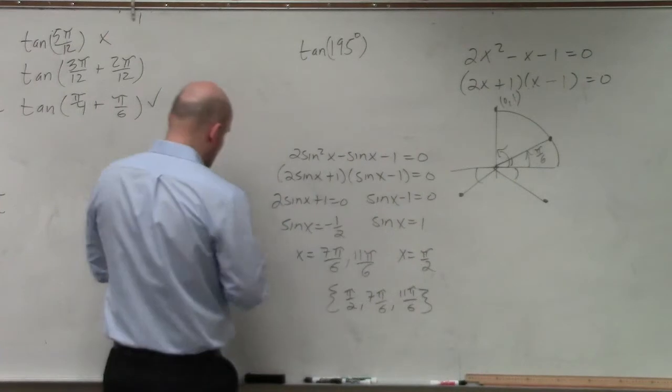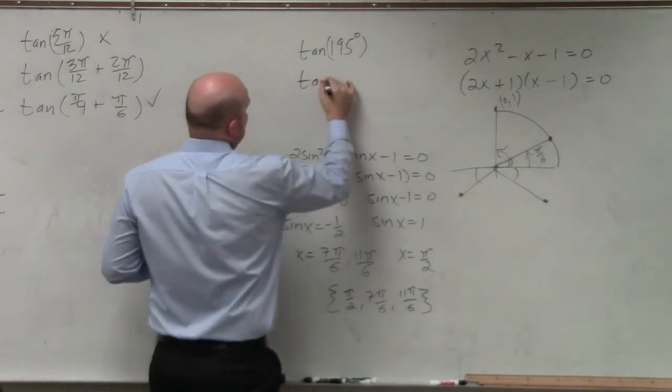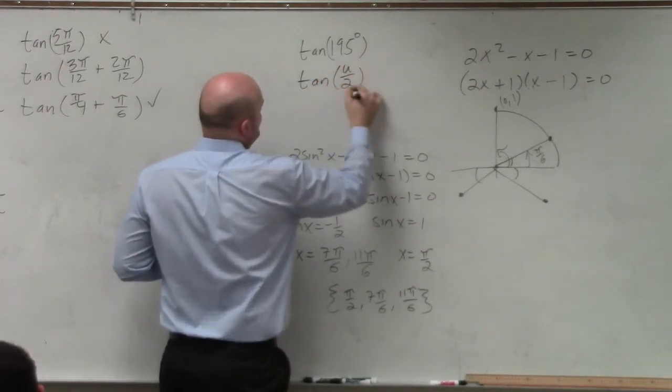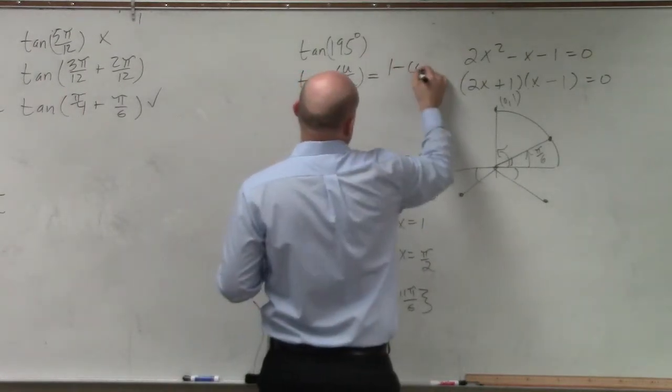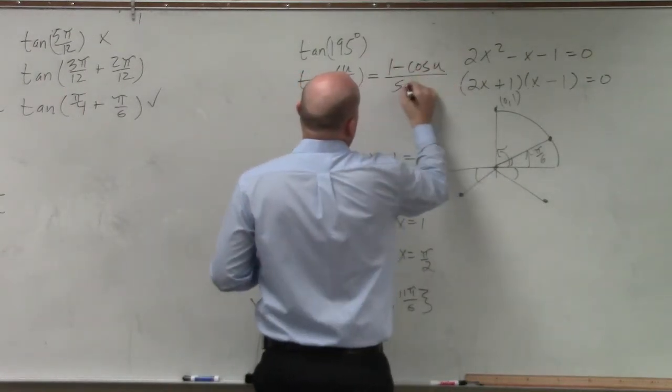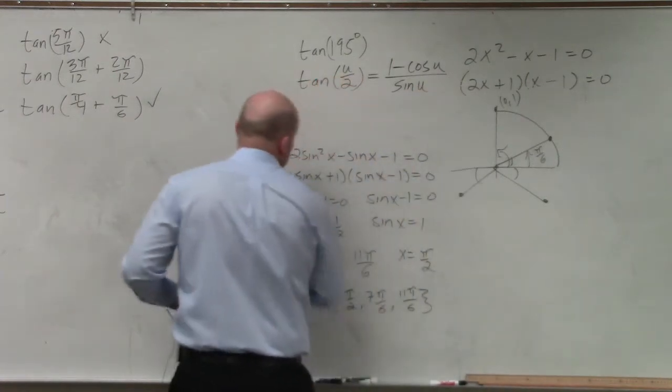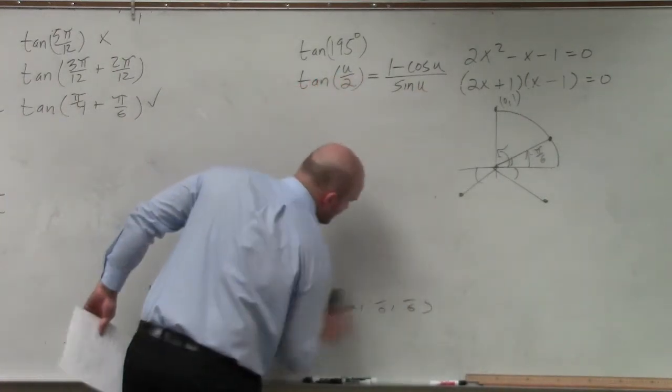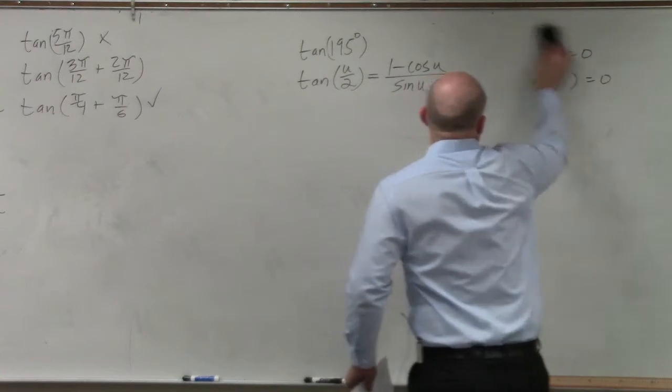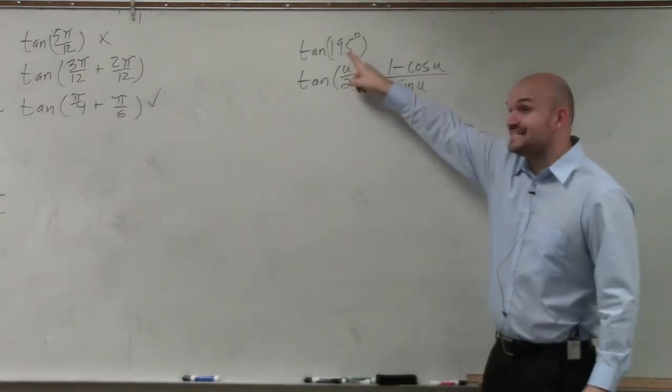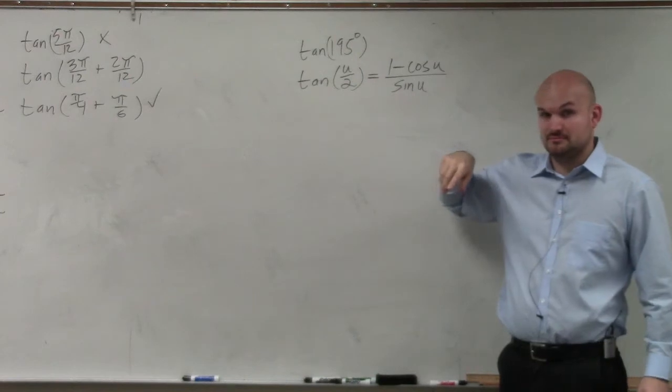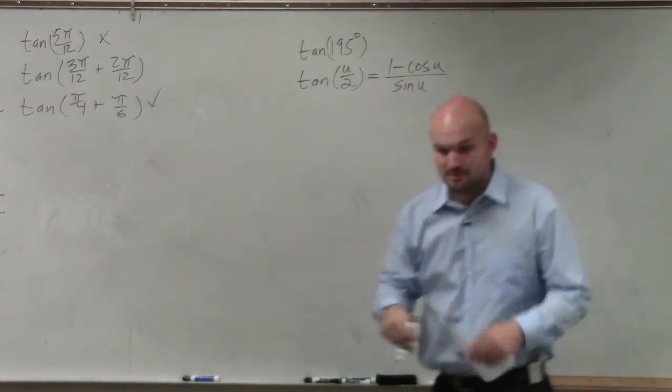So what the half angle formula says, if we're going to use tangent of u over 2, the first formula is cosine of u over sine of u. So it's saying for this, use that formula. Do you guys agree? Now, let's look at this formula.